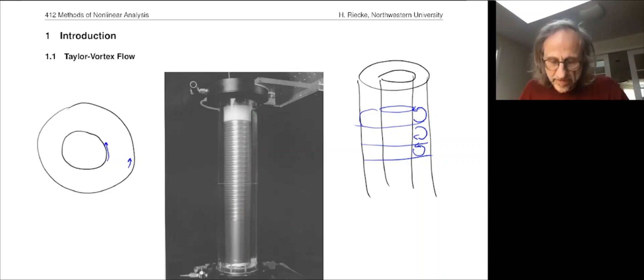The point to make here is that as you change that control parameter, the rotation rate of the inner cylinder, you get a qualitative change from a featureless flow to one of vortices that break the translation symmetry. And so if you now change the parameter further, it turns out you can have further qualitative changes. You get these transitions to qualitatively different states.